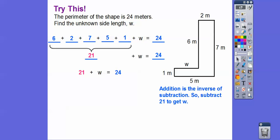We're going to go ahead and subtract, because subtraction is the inverse operation of addition. So we'll subtract 21, and we get that other side, the W side, to equal 3 right there. So for the perimeter to be 24 meters, then this has to be 3 meters right here. So the unknown side length, W, is 3 meters long right there.